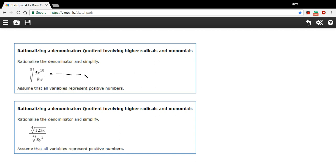We have the cube root of 5x to the 10th over 9w. And I think the first step, just to make this problem a little more clear, is to separate this into the top and the bottom, the numerator and the denominator, because we want to be thinking about these two pieces separately. So this is the cube root of 5x to the 10th over the cube root of 9w.